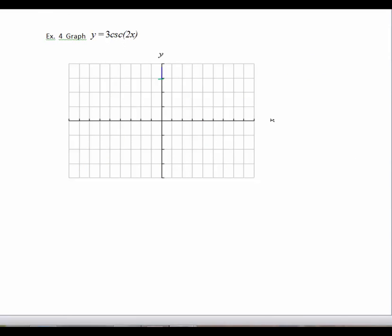So to graph y equals 3 cosecant 2x, it's actually the same as graphing 3 times 1 over the sine of 2x. And so what we're going to do is graph lightly the sine of 2x. And we know that the 3 here is going to, all of our values are going to be multiplied by 3. So we'll do a rough sketch and then we will do the vertical stretch.